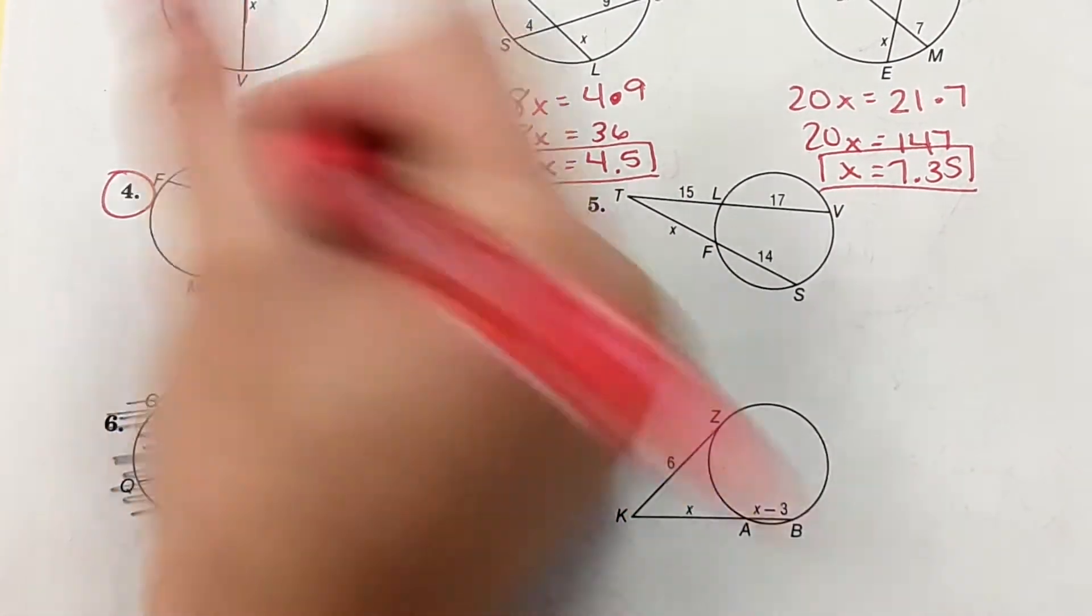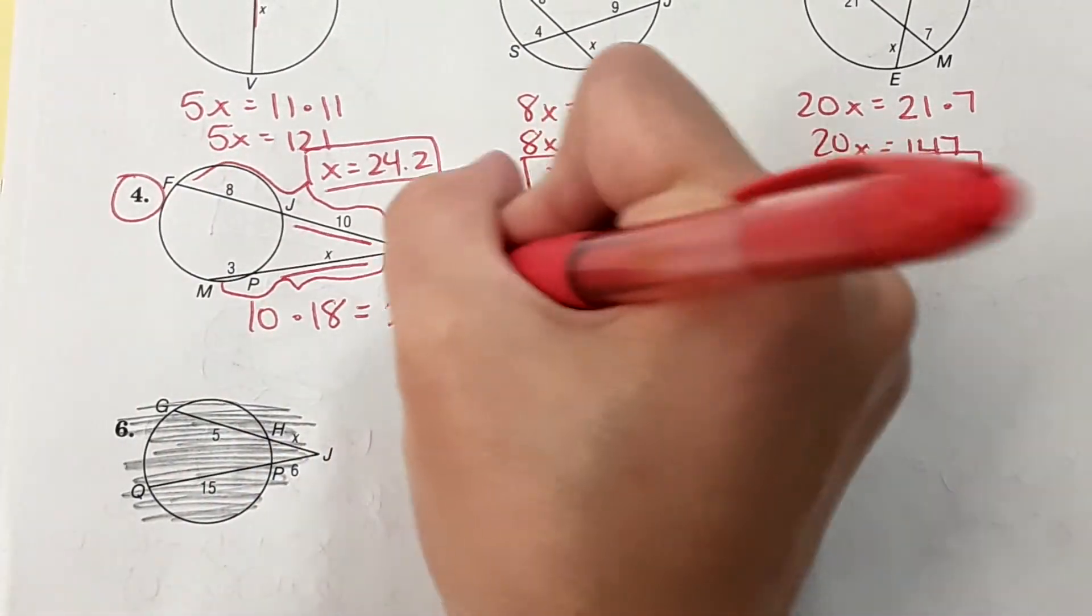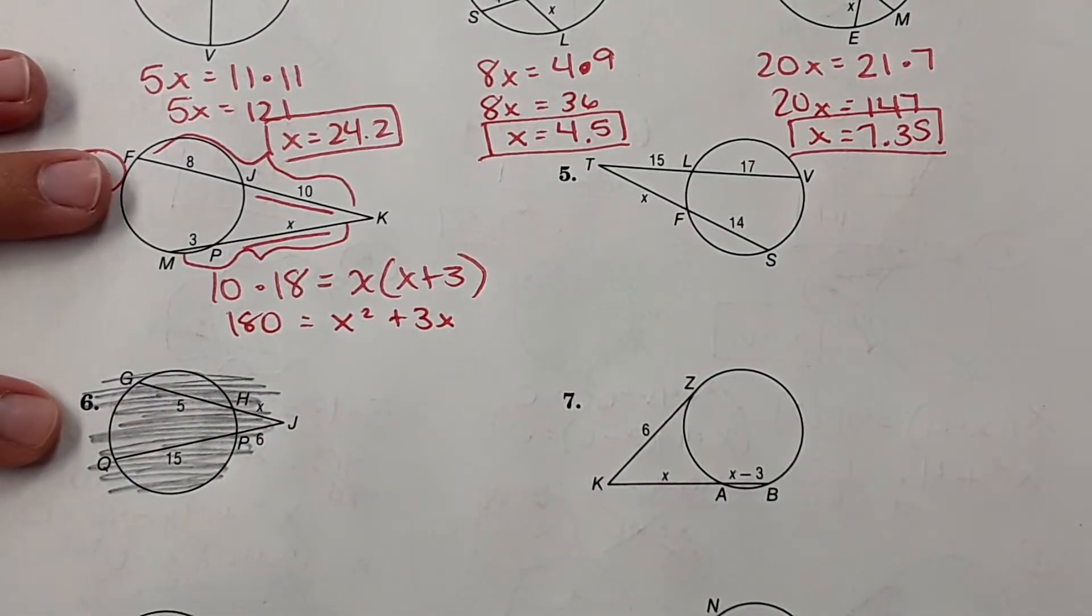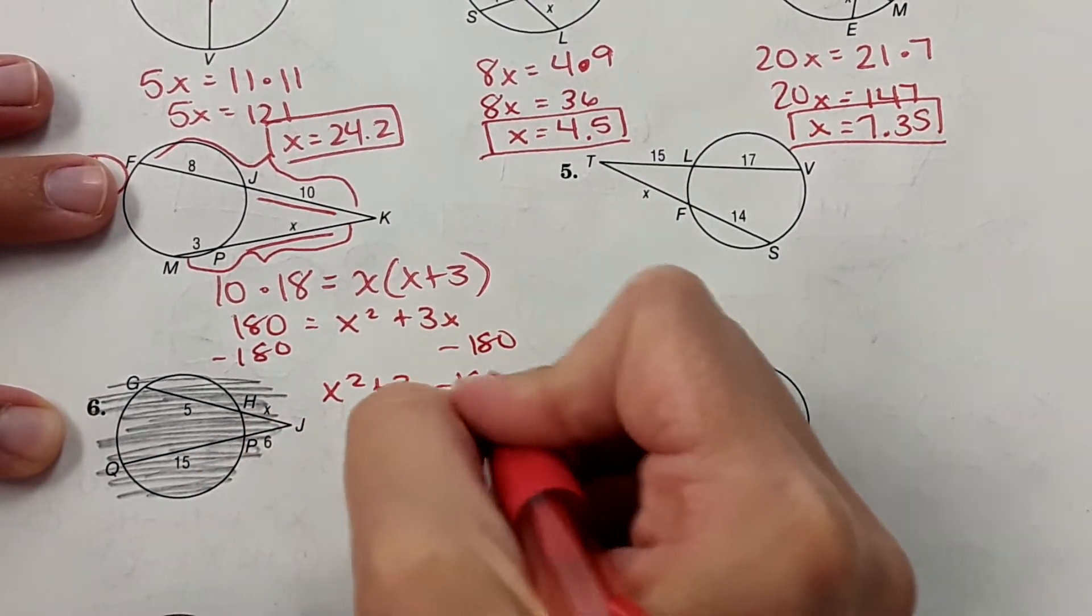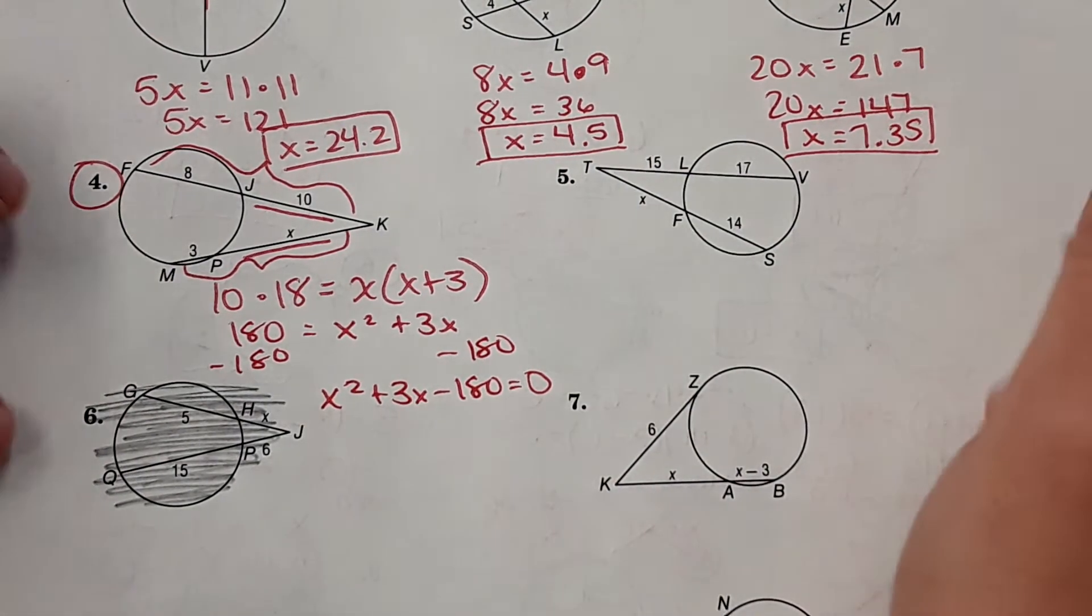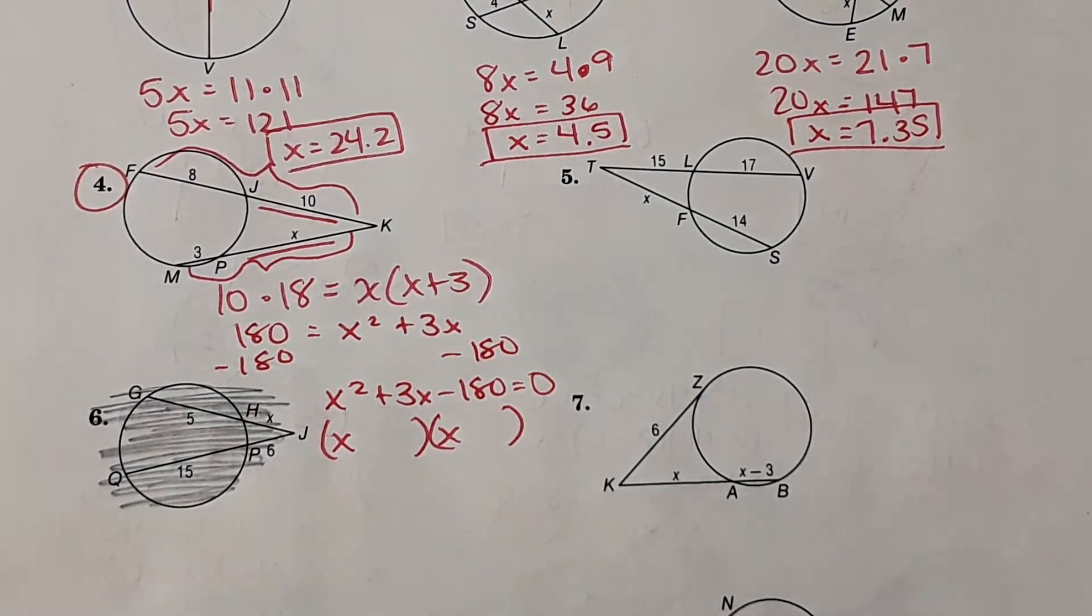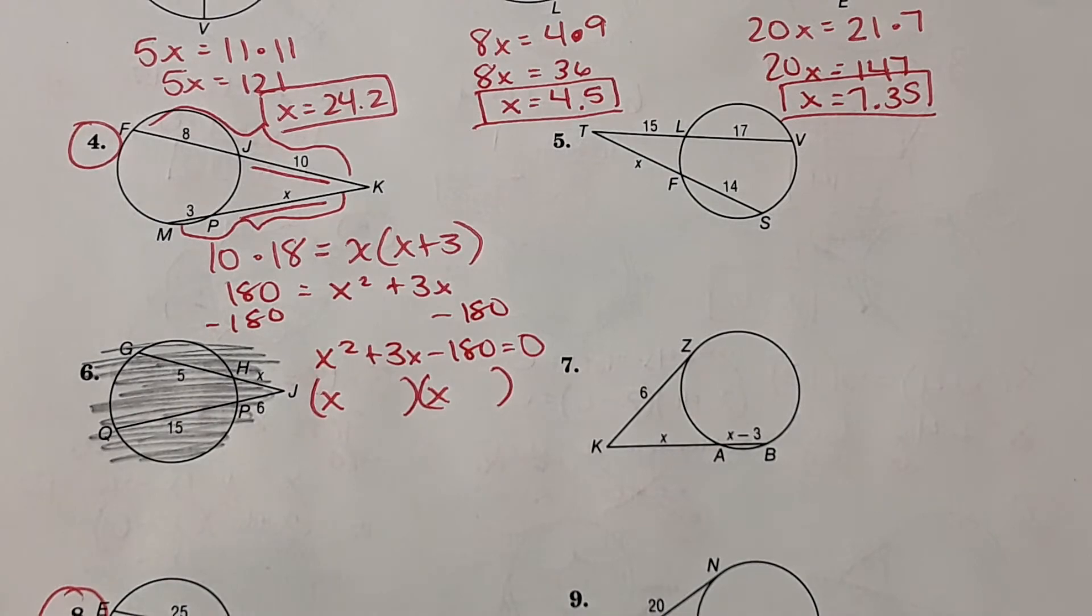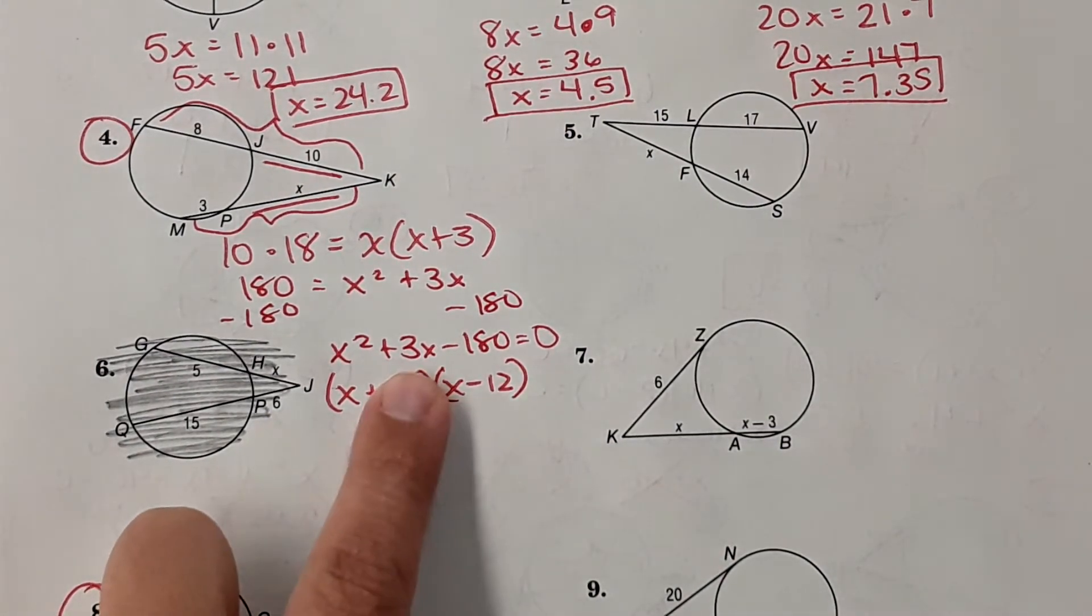We're going to do 10 times the whole distance. So it'll be 10 times 18 equals x times the whole distance, x plus 3. We get 180 equals x squared plus 3x. We'll subtract 180 from both sides to get it equal to 0. By the way, Ms. Willits used to teach Geometry Honors and she used to require all of her Honors students to be able to do this. So if you're an Honors student, keep that in mind that you should be able to do this. So we're going to factor this out. Two numbers that multiply to negative 180 that add to 3 would be positive 15, negative 12. The reason why I chose positive 15, negative 12 is that would add to positive 3, not negative 3.